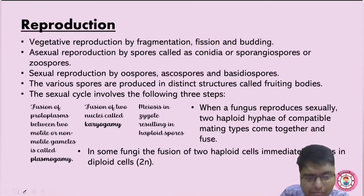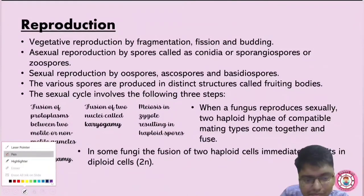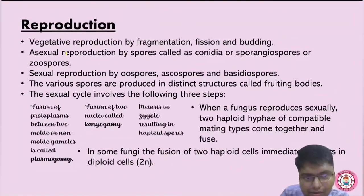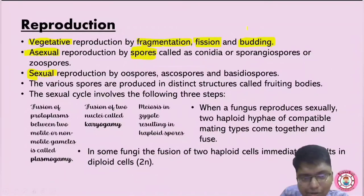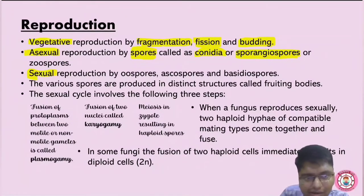Reproduction in fungi is done by three methods: vegetative, asexual, and sexual. Vegetative reproduction occurs by fragmentation, fission, and budding. Asexual reproduction is done by spores known as conidia, sporangiospores, or zoospores. Sexual reproduction produces spores called oospores, ascospores, and basidiospores.